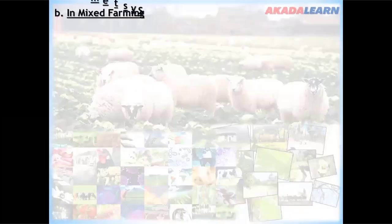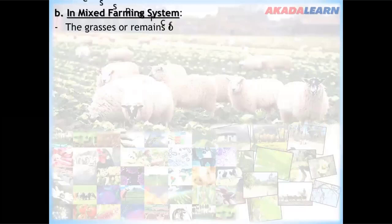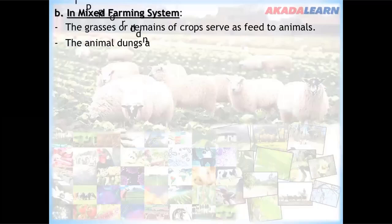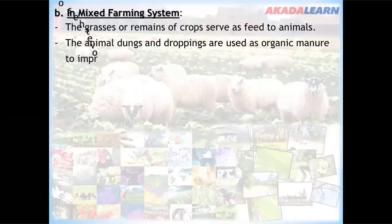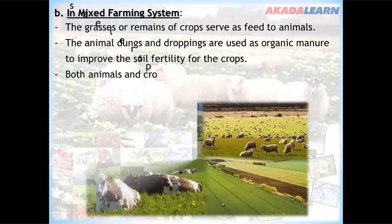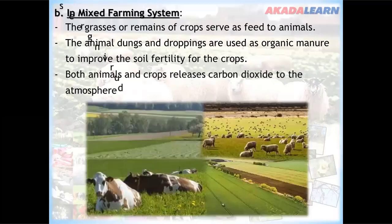In a mixed farming system, grasses or crop remains serve as feed for animals. Animal dung and droppings are used as organic manure to improve soil fertility for crops. Both animals and crops release carbon dioxide to the atmosphere during respiration, which is then used in photosynthesis.